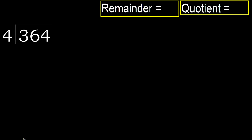364 divided by 4. 3 is less, therefore next. 36 is not less, therefore with 36.